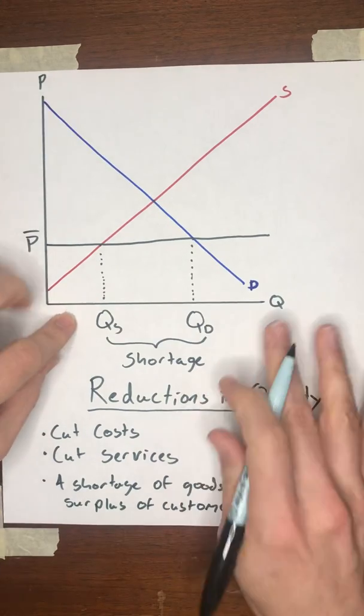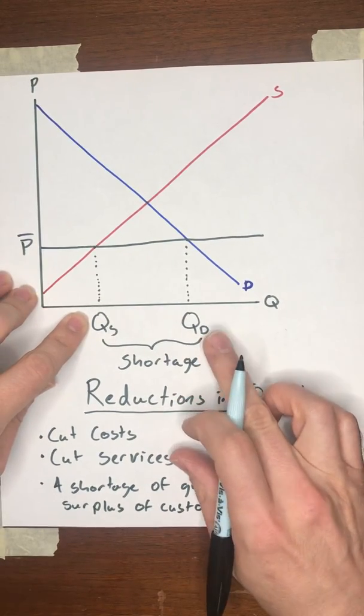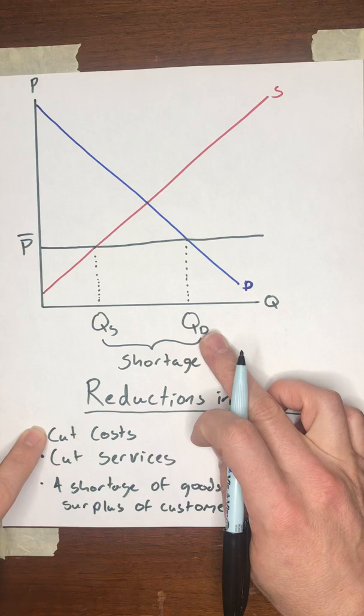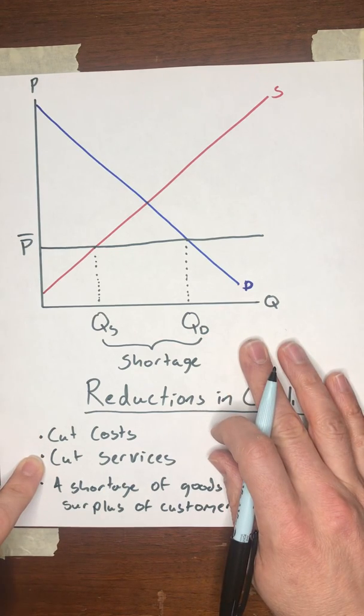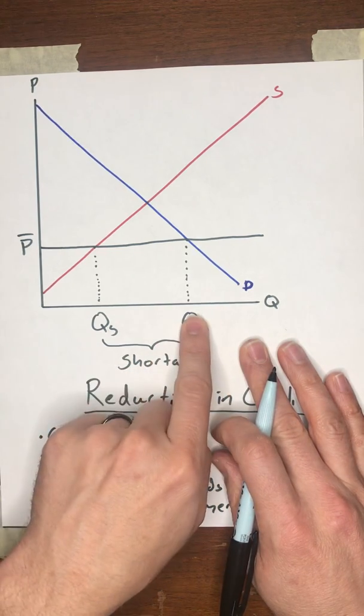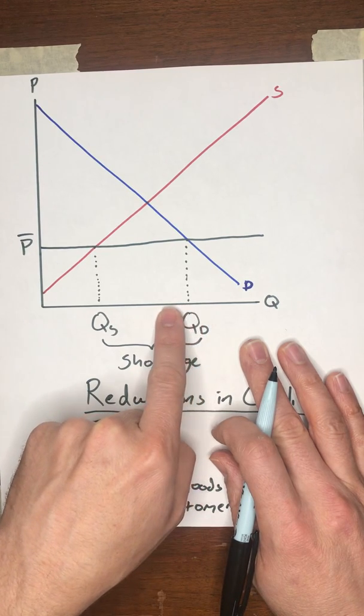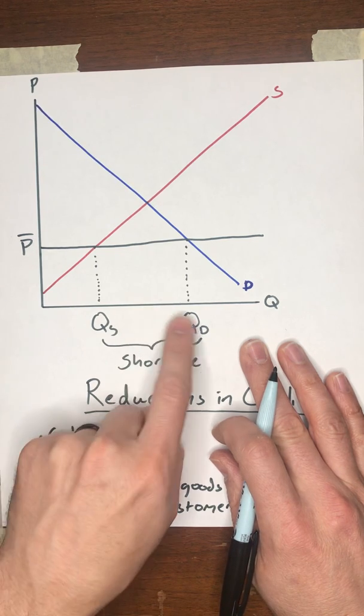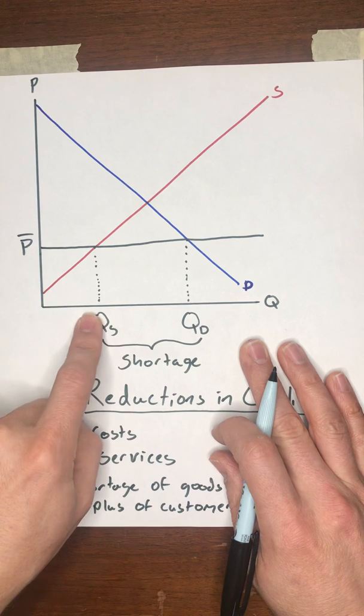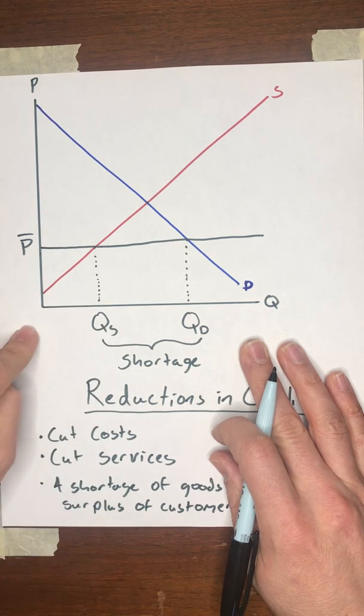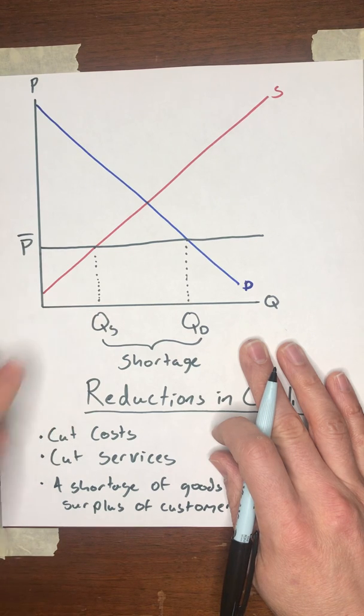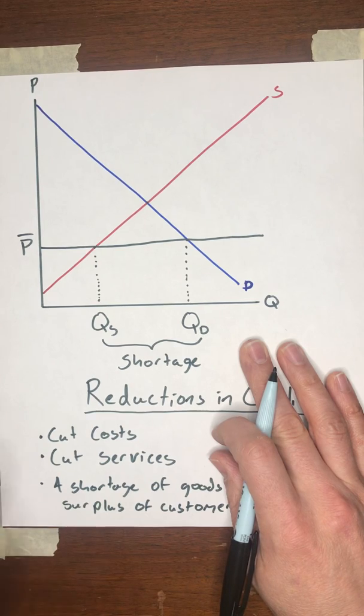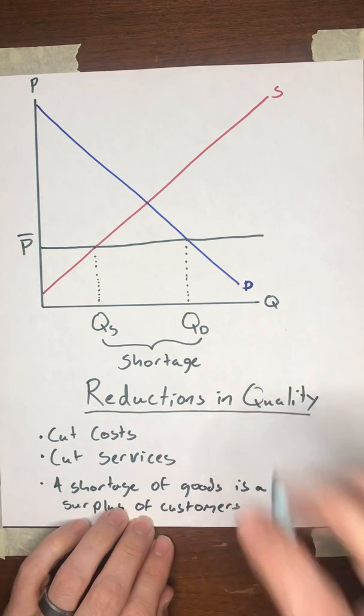So you already have people knocking down your door, trying to get everything that you're willing to sell. And so when you cut your costs by reducing the quality of your good or cutting services that are associated with it, sure, you're going to lose some customers. Some of this quantity demanded is going to shrink and shift to the left, but that's not a problem for you. You can still sell all you want to until that quantity demanded comes all the way down here. So under conditions of price ceilings, there's plenty of room for the sellers to cut the value of their costs and reduce services that are associated with their goods because they have this big surplus of consumers.